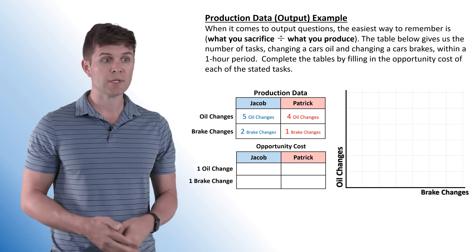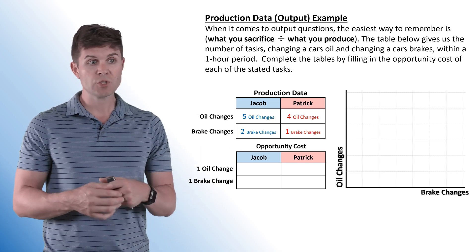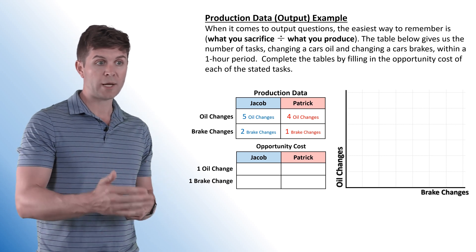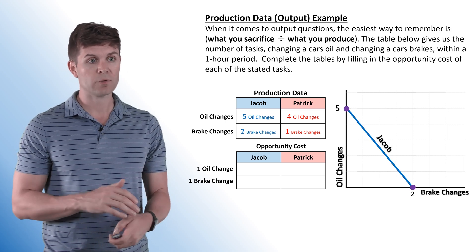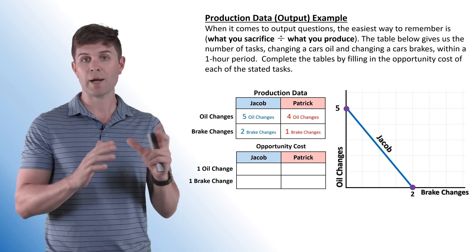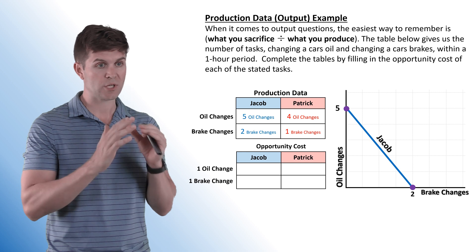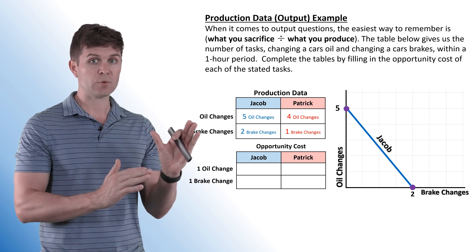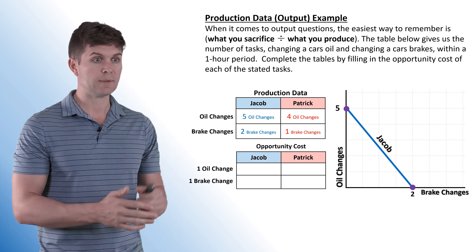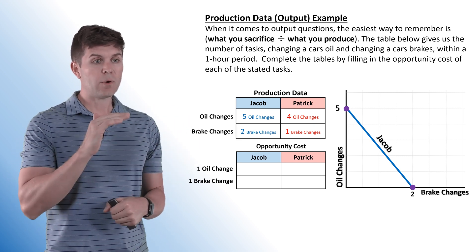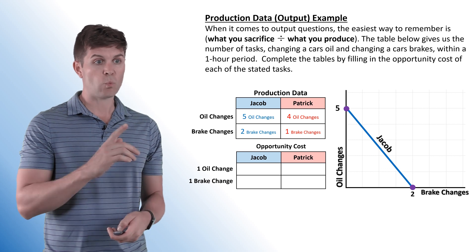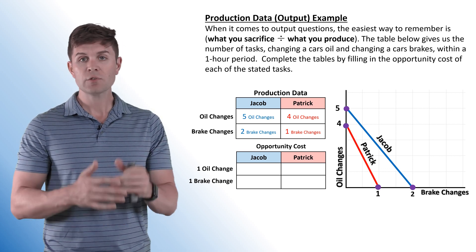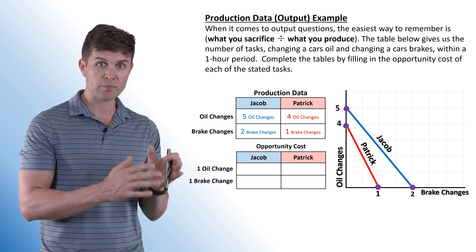Jacob can do five oil changes per hour and two brake changes per hour, so we can throw that right up on a production possibility frontier — that's Jacob's constant opportunity cost curve. Now Patrick can do four oil changes and one brake change per hour, so we have his curve there.